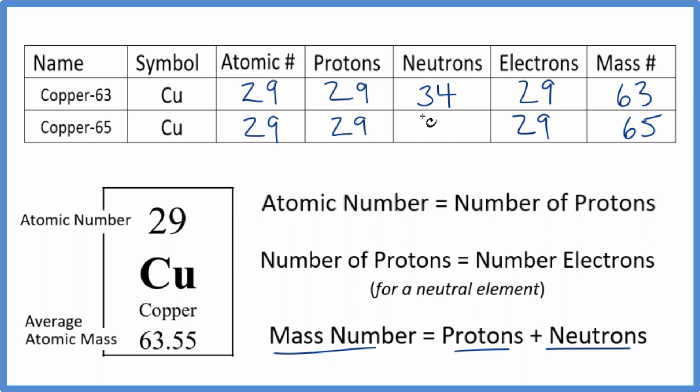Likewise, down here, 29 plus 36 would give us 65. So the mass number equals protons plus neutrons, and we have all the information here.